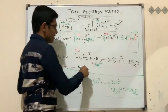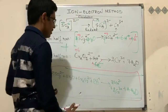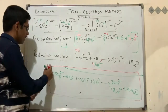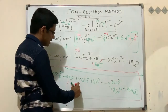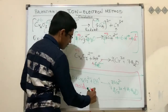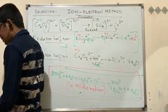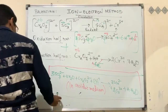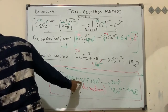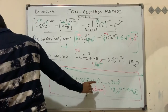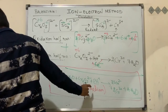This balanced chemical equation is very important. Balancing redox equations is a sure question in your Grade 12 board exam, as well as in 11th standard. The final balanced equation is: Cr₂O₇²⁻ + 3SO₃²⁻ + 8H⁺ → 2Cr³⁺ + 3SO₄²⁻ + 4H₂O. Always state that the reaction occurs in acidic medium.